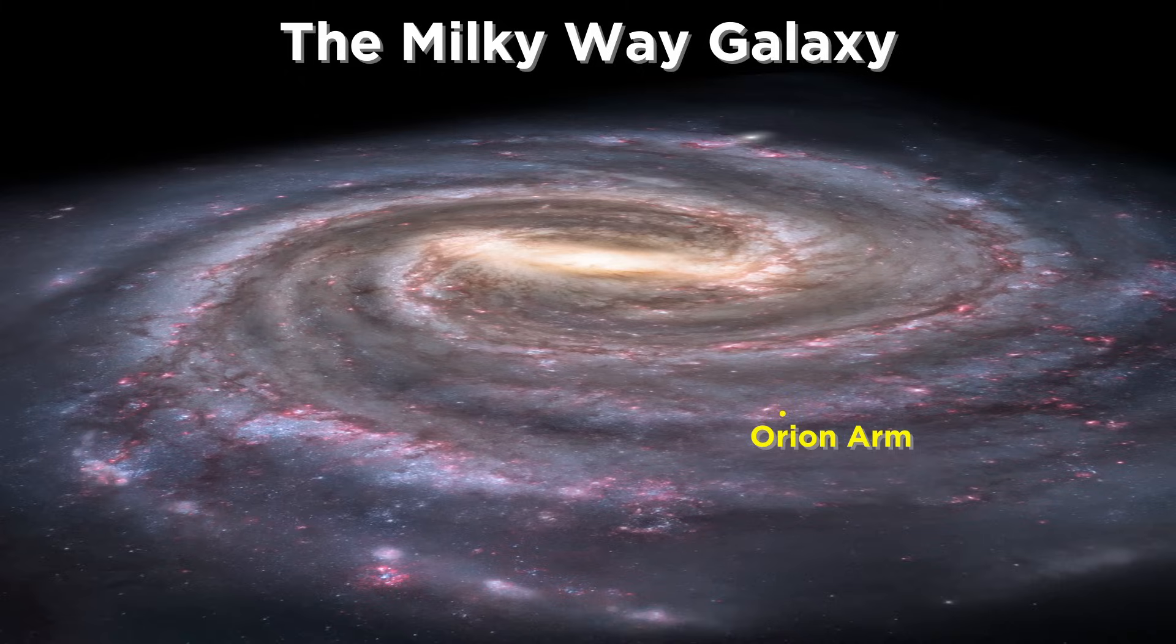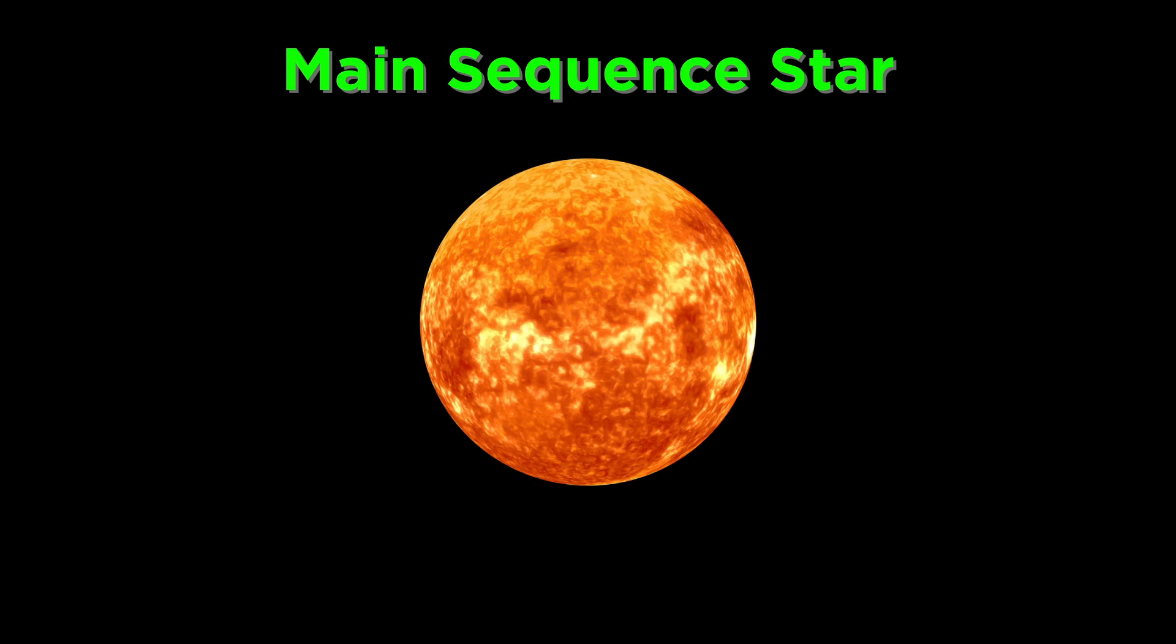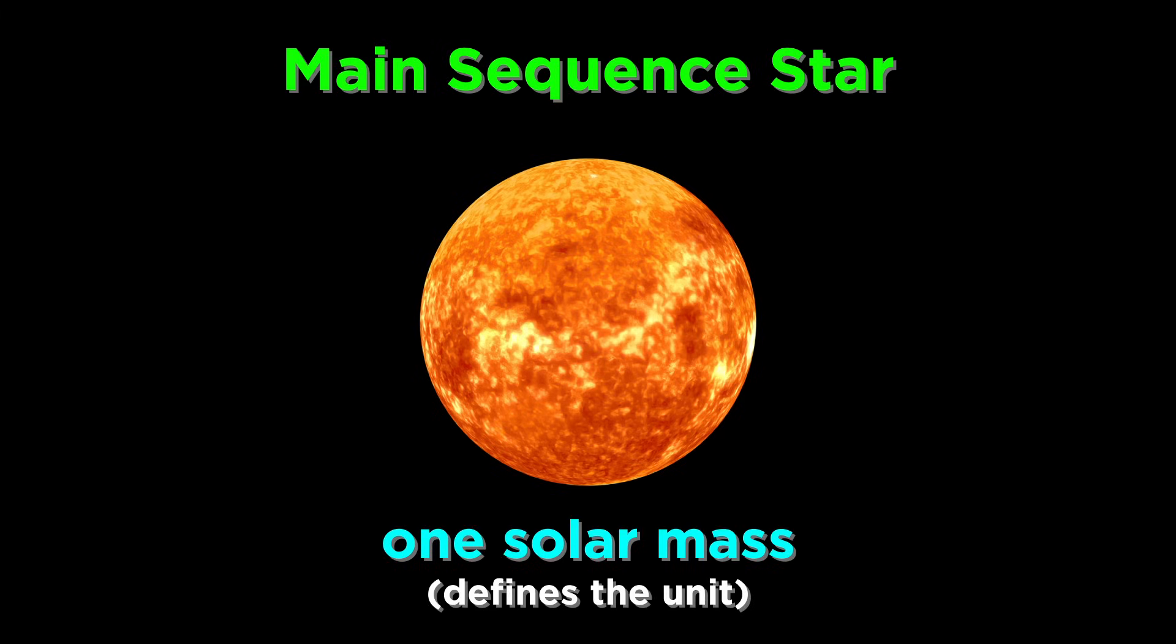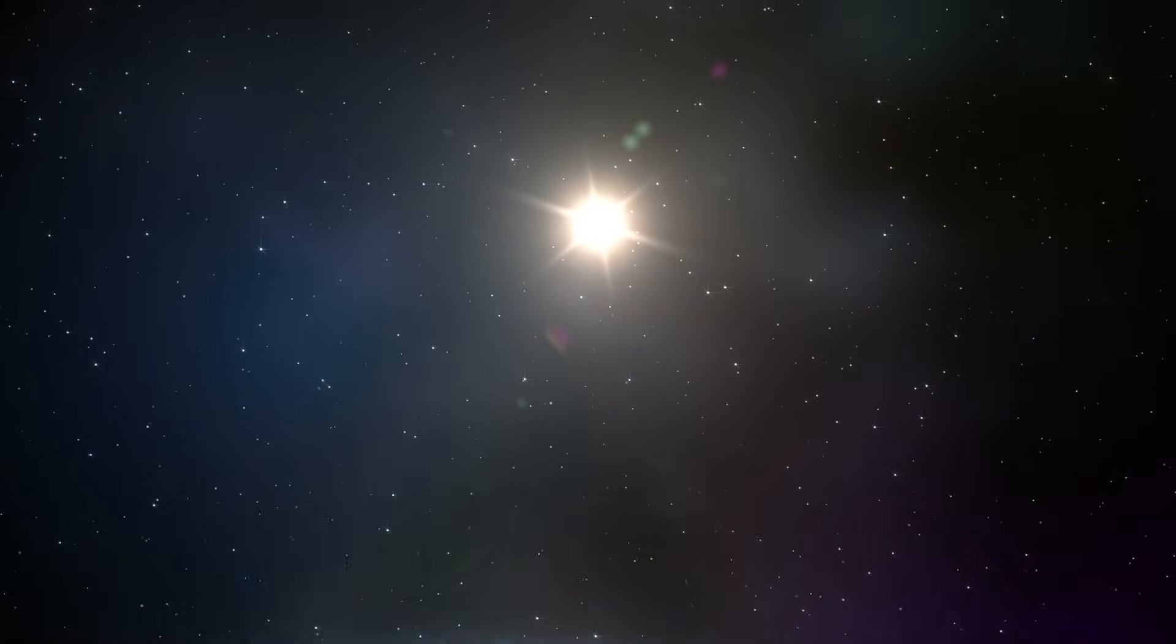If we zoom in on this portion of the Orion arm, fairly distant from galactic center, we see a yellow main sequence star. This star is not special as far as stars go. It's not very big, at precisely one solar mass, serving as the definition for the unit. In fact, it's rather on the small side as far as stars go. The only thing that makes this star special is that it's ours.